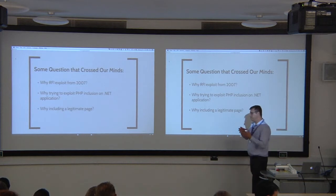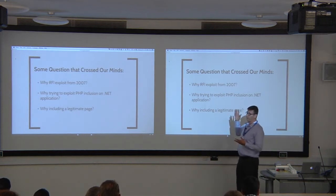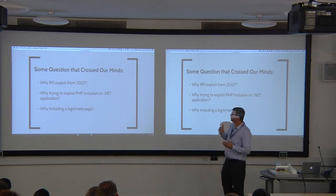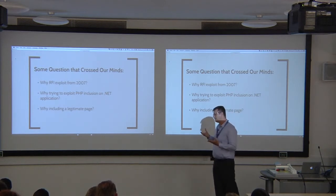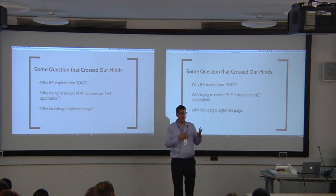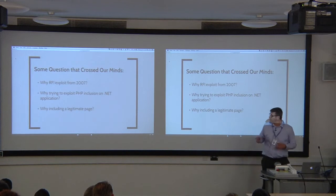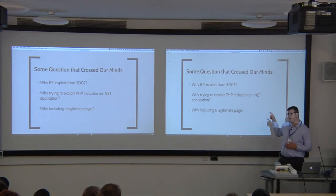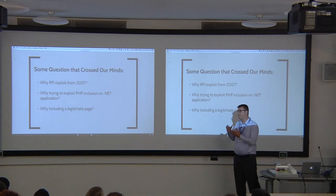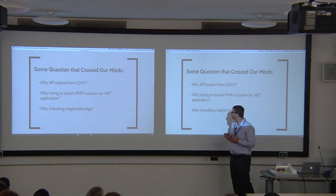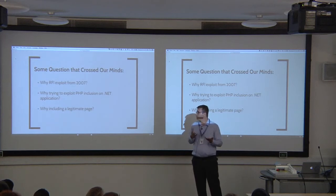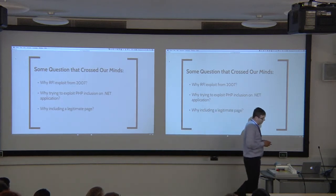While doing that analysis, some questions crossed my mind. First, I looked at that exploit - it's from 2007. Why should someone try to exploit a vulnerability from 2007? You would expect such a vulnerability would already be mitigated. Second, I know my customer's platform is .NET, and someone is trying to inject a PHP WordPress vulnerability. Why is he doing that? That's not smart. And third, we talked about it - it's the legitimate humans.txt page on Google. Why should someone use that page? Doesn't make sense. We'll come back to those questions.